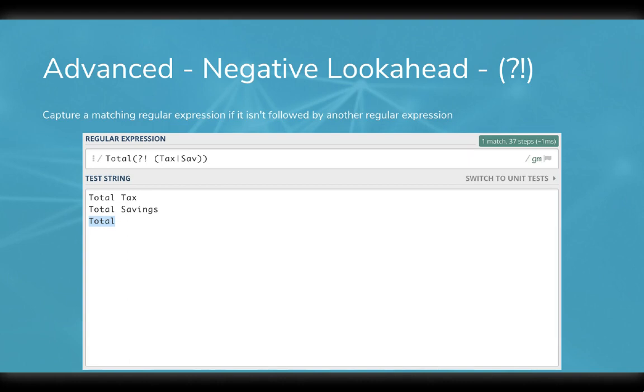A negative look ahead has a similar structure to the positive look behind, but begins with the regular expression we actually want to capture, followed by open parentheses, question mark, an exclamation point, and then the regular expression we don't want following our matched text and a closing parentheses.